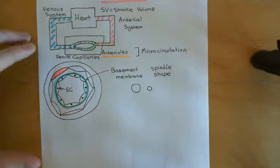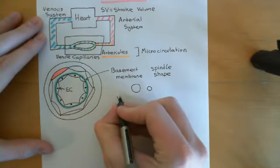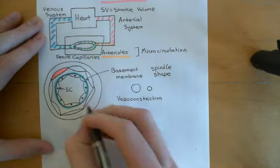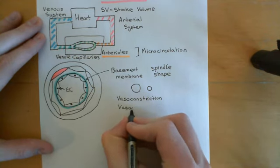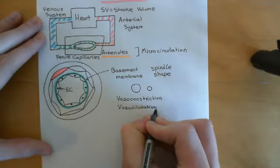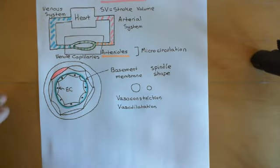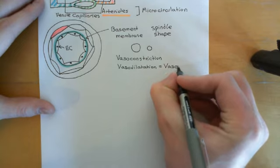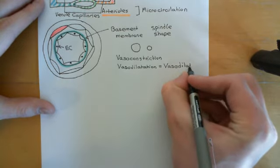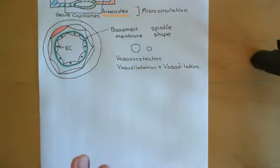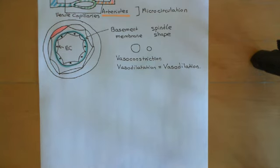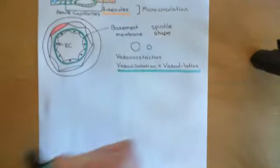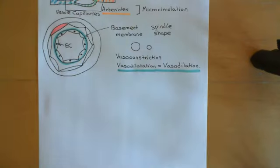If these smooth muscle cells contract, it causes what's known as vasoconstriction — meaning the diameter of the lumen of the arteriole is decreasing. If they relax, it causes what's known as vasodilatation — meaning the diameter of the lumen is increasing. I should note that some people call vasodilatation just 'vasodilation.' In the physiology textbooks the correct word is vasodilatation, but often people use these two words interchangeably — they do mean the same thing.